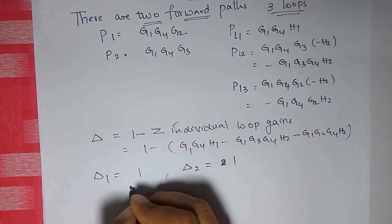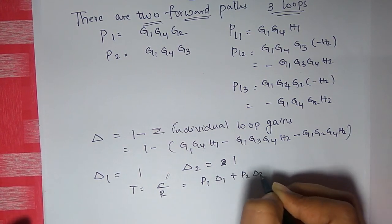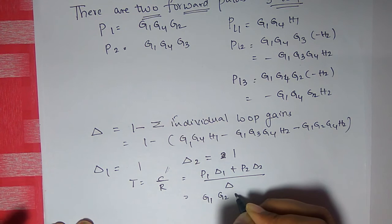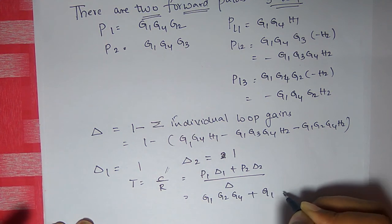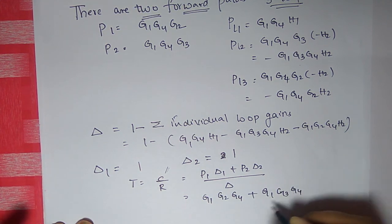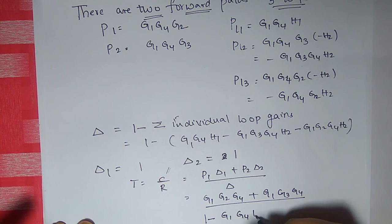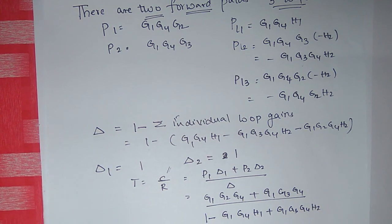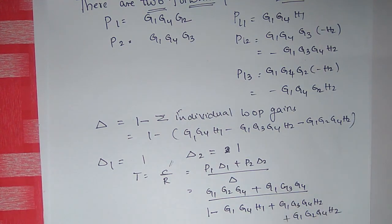Finally, the transfer function is: C/R = (P1·Δ1 + P2·Δ2) / Δ = (G1·G2·G4·1 + G1·G3·G4·1) / (1 − G1·G4·H1 + G1·G3·G4·H2 + G1·G2·G4·H2). This is the required transfer function for the given block diagram.